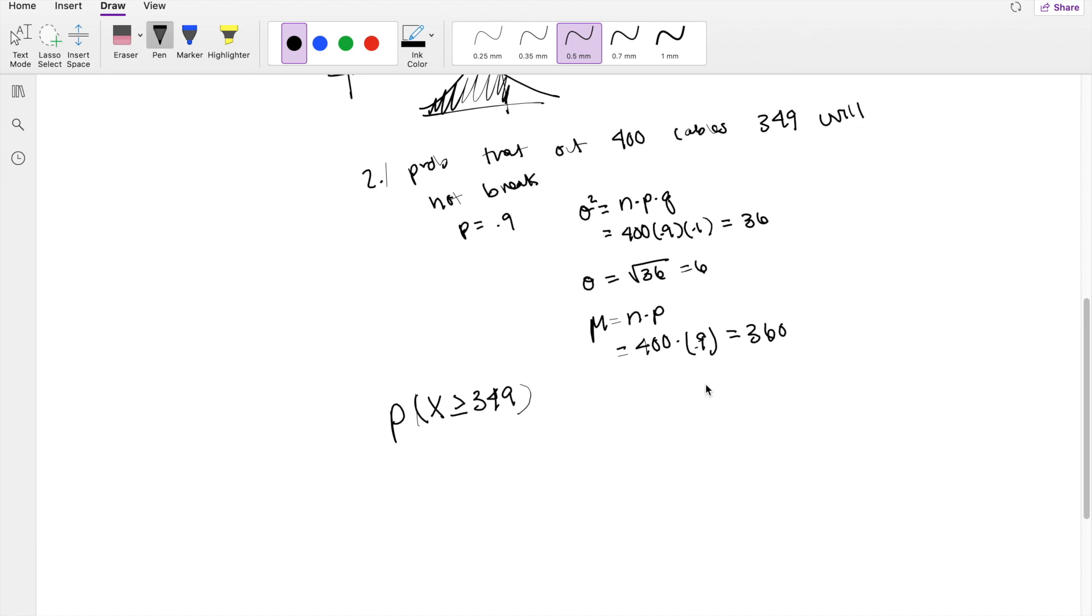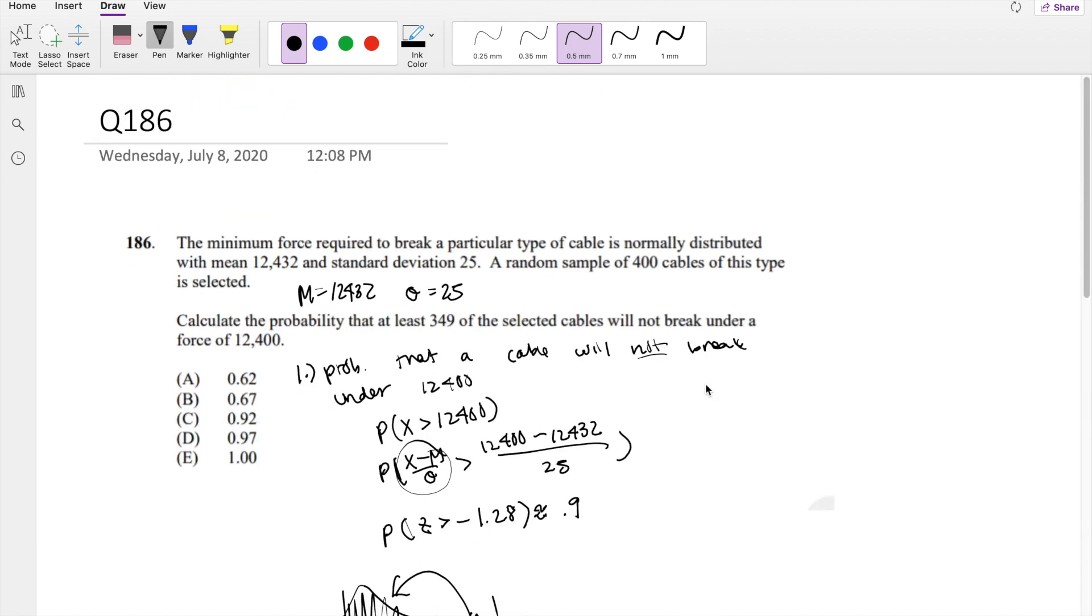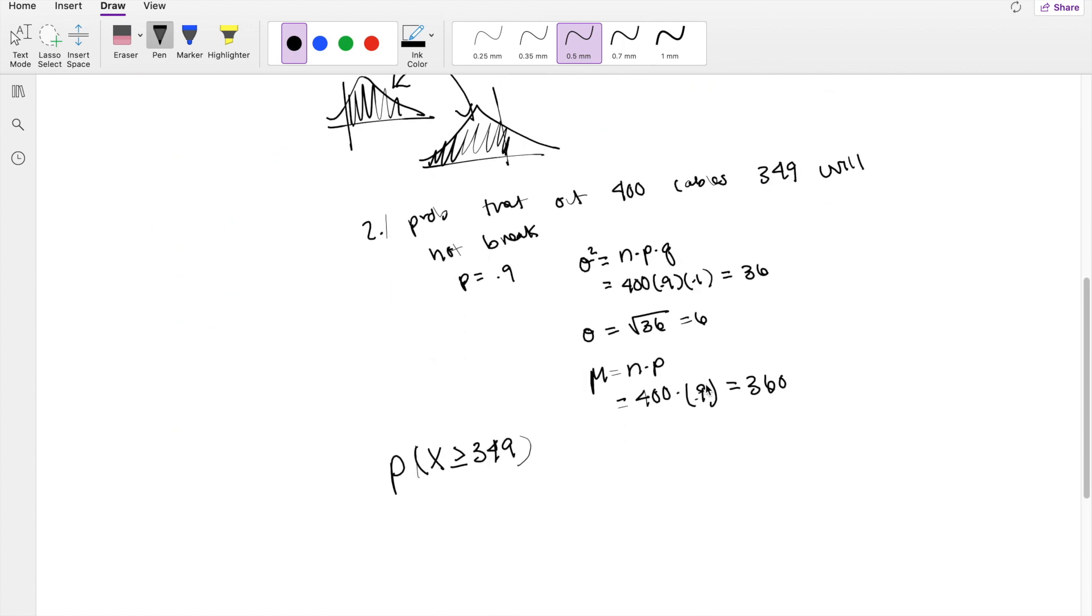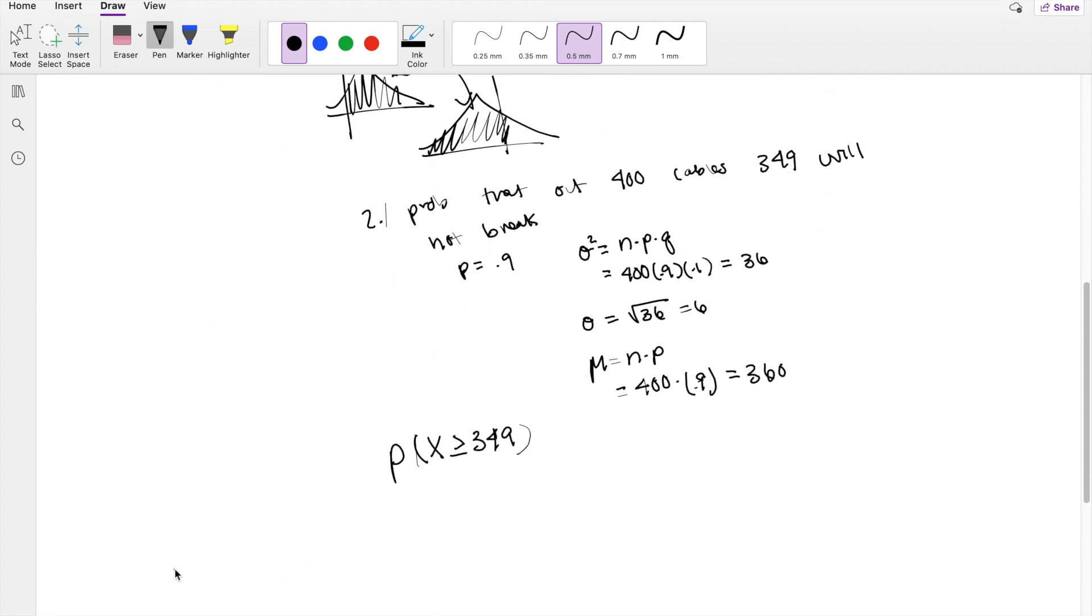Because this is a discrete variable, meaning we can't have 0.6 of a cable, you have to have a whole number, we have to do a continuity correction. If you're not sure about continuity correction, I made a whole video about it. Make sure you check it out.